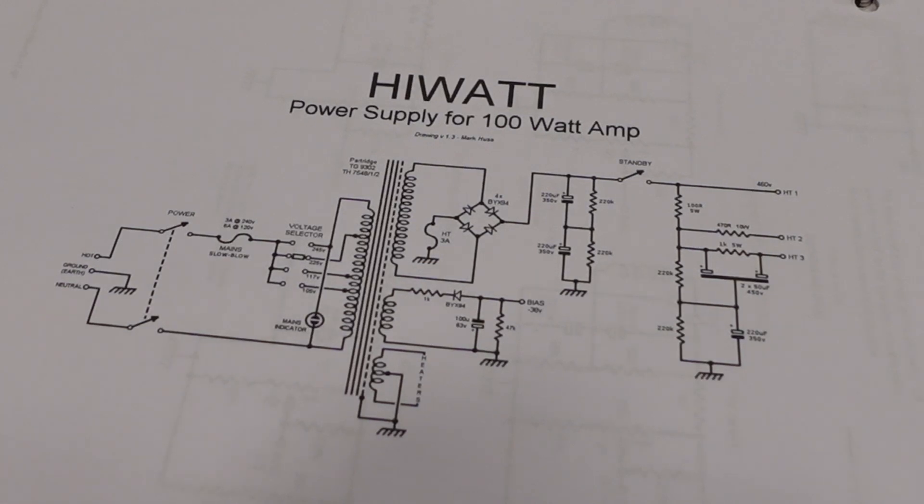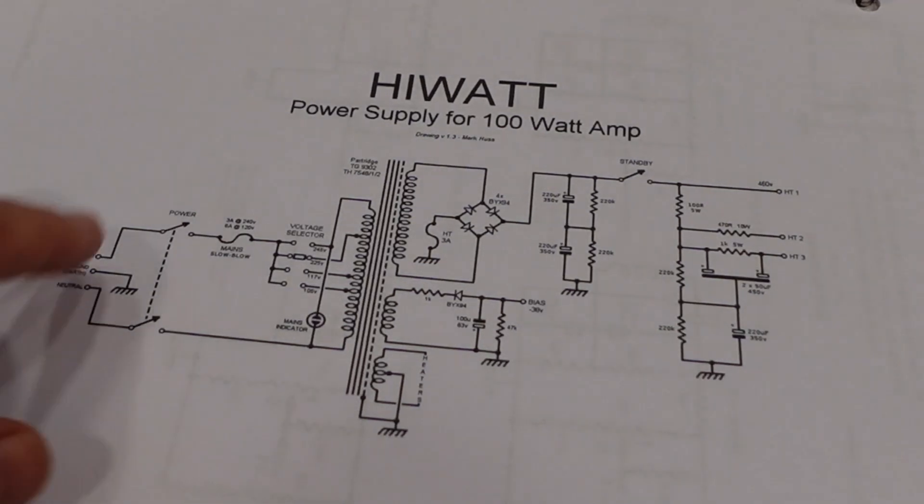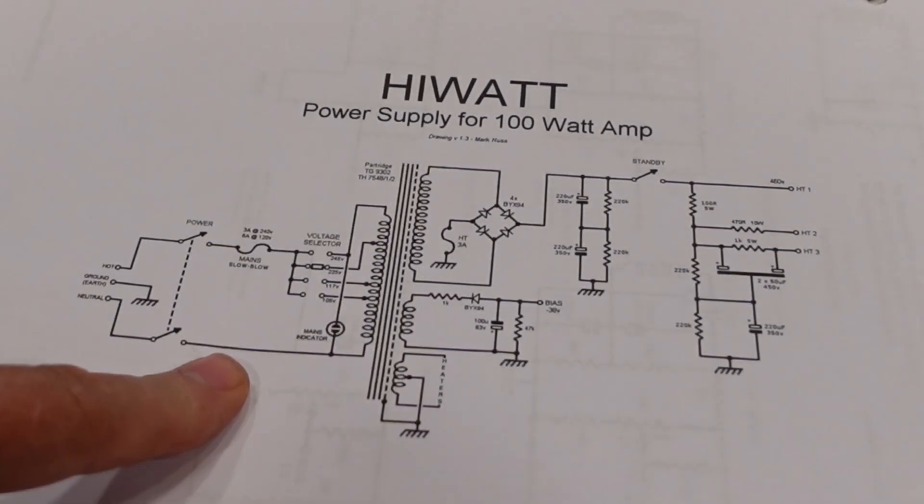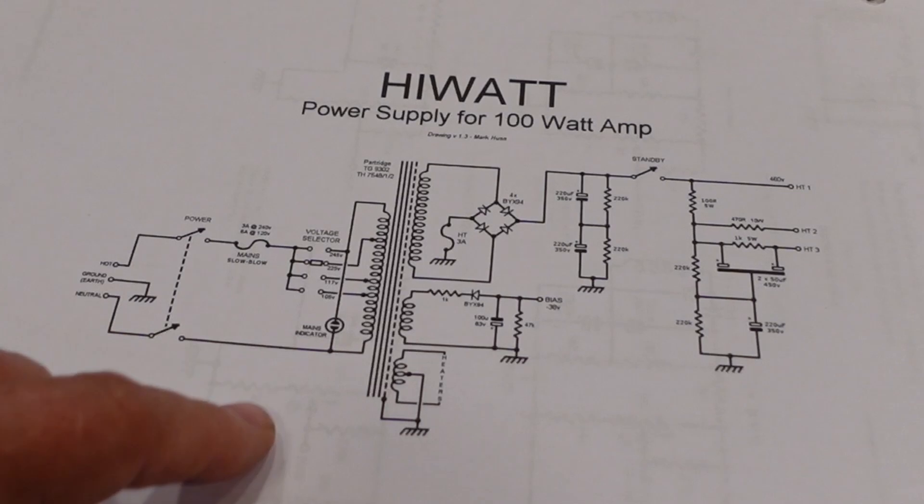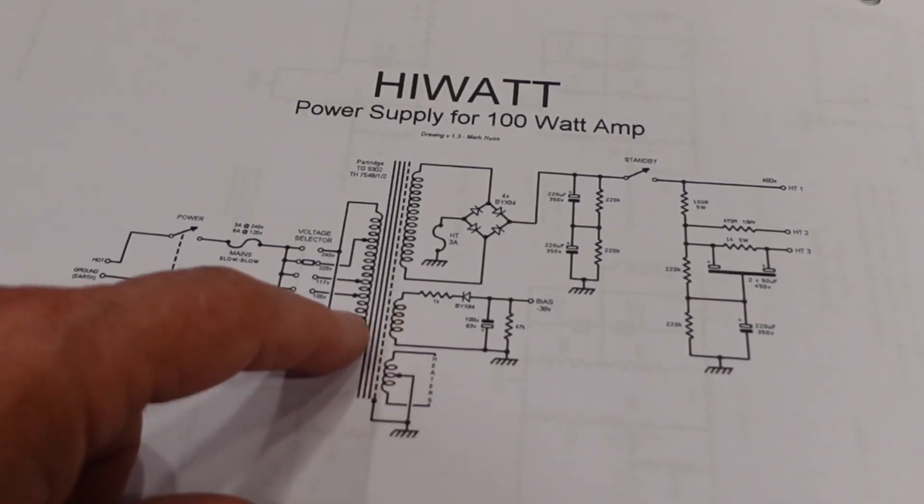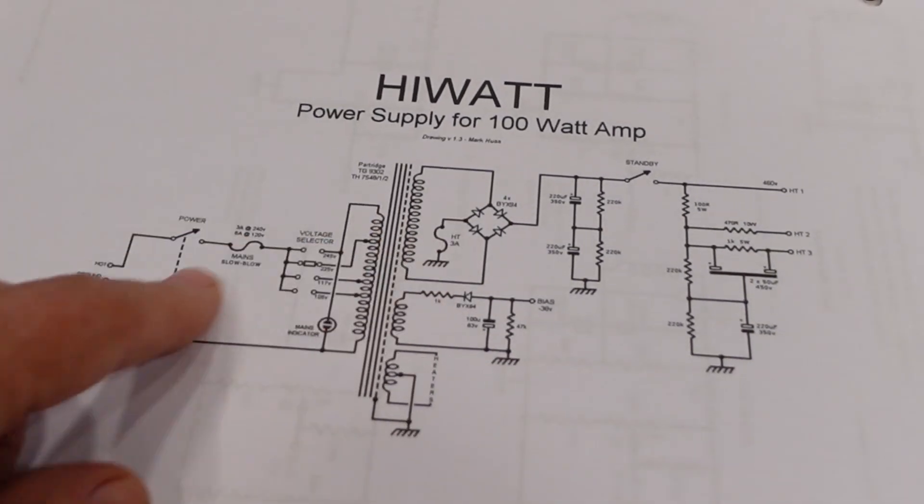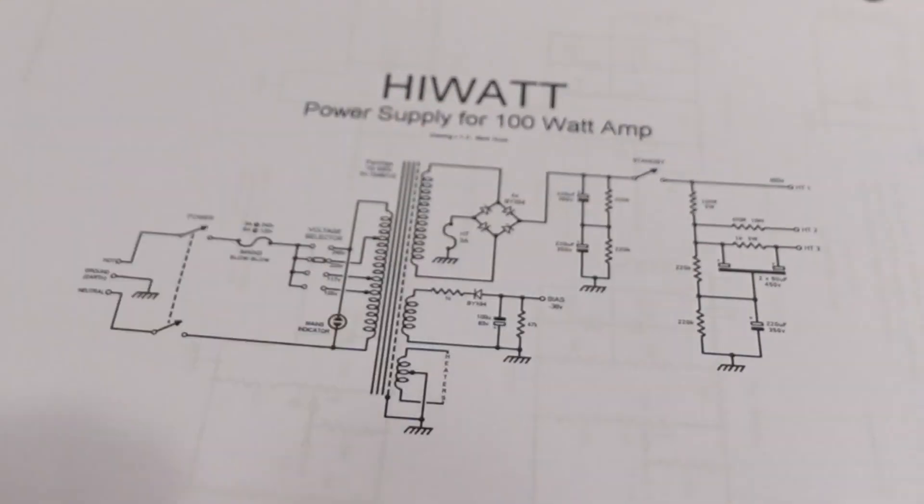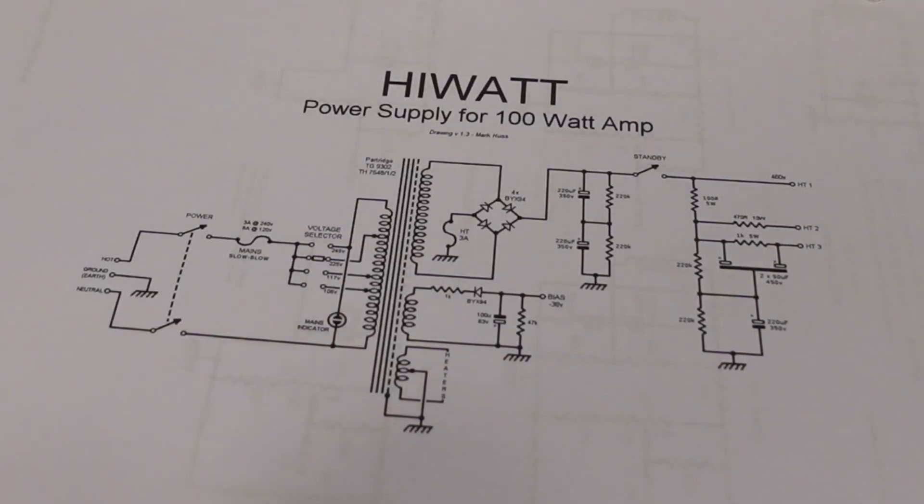It goes together like the wiring diagram. You basically got your on switch, your first fuse, mains indicator, to the primary of the transformer, and then you have your heater winding, your bias winding, and then your high voltage winding, RC network for filtering, and then finally voltage divider networks for the different voltages used throughout the amp.